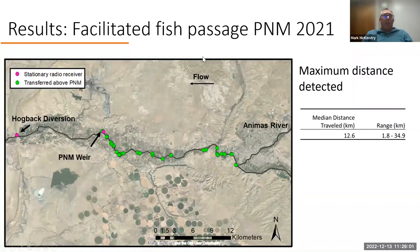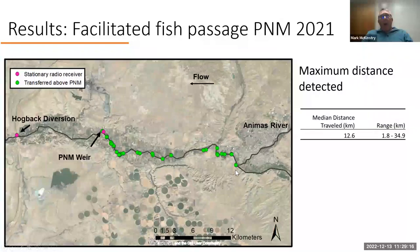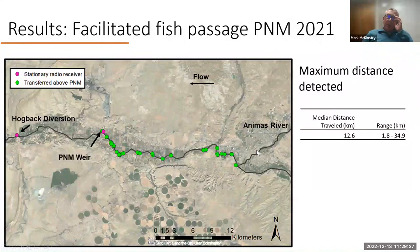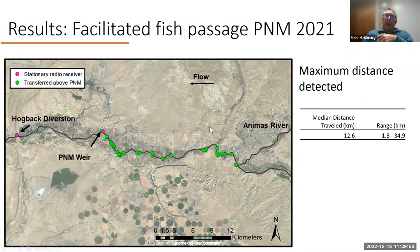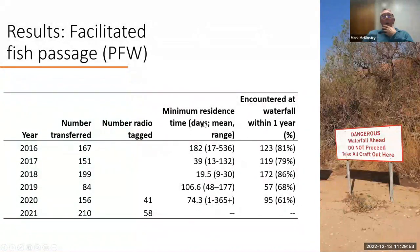Looking at PNM fish passage results — a little different story. Matt detected fish kind of all over and did identify a likely spawning site close to the Animas River. However, in both years he was doing this work, the Animas River did not have really good spring flows. We thought maybe the flow needed to trigger upstream movement into the Animas to spawn just wasn't there during those two years. The median distance traveled above PNM was about 12.6 kilometers further upstream.